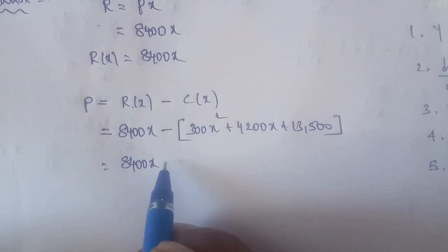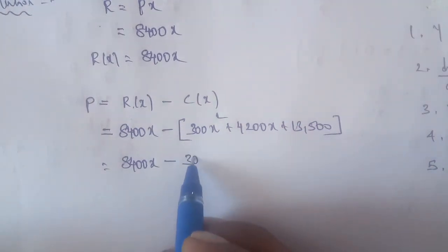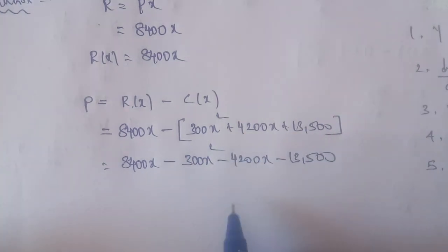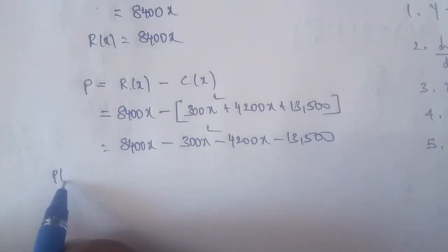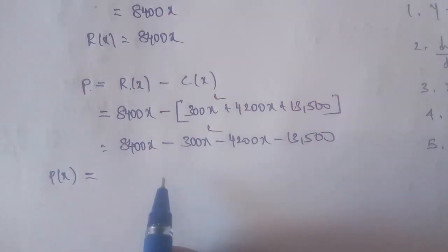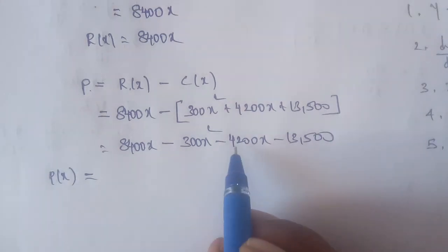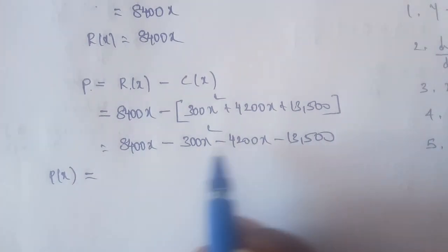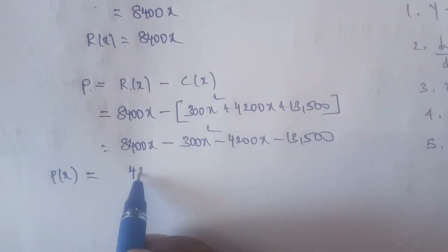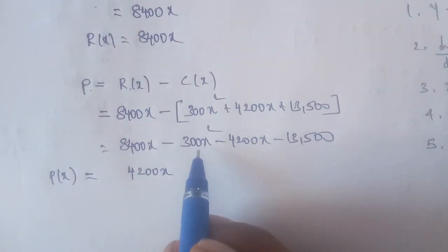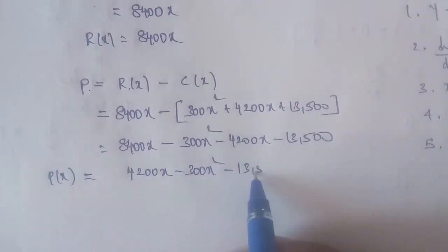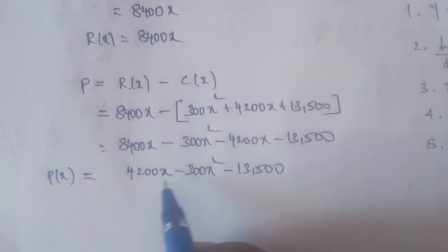Substituting the cost function: P of X equals 8400X minus (300X squared plus 4200X plus 13500), which gives P of X equals 8400X minus 300X squared minus 4200X minus 13500. Simplifying: P of X equals minus 300X squared plus 4200X minus 13500. This is the profit function.